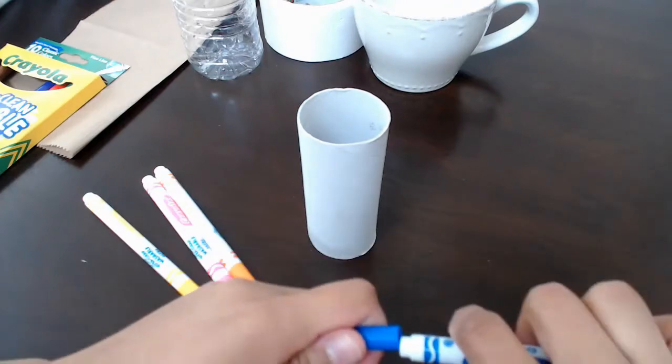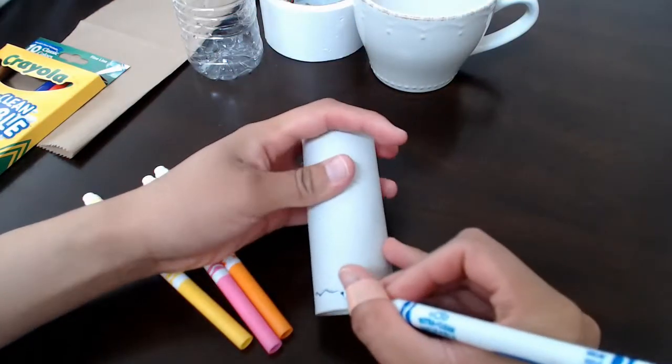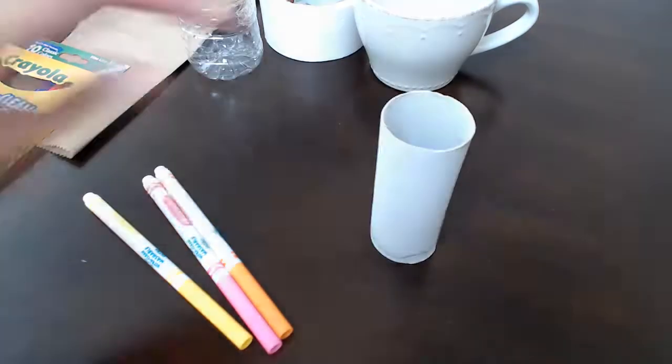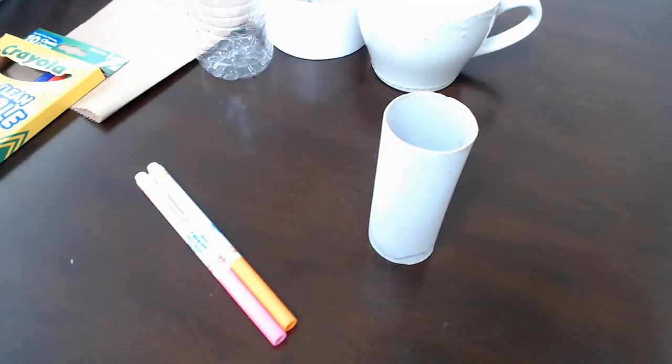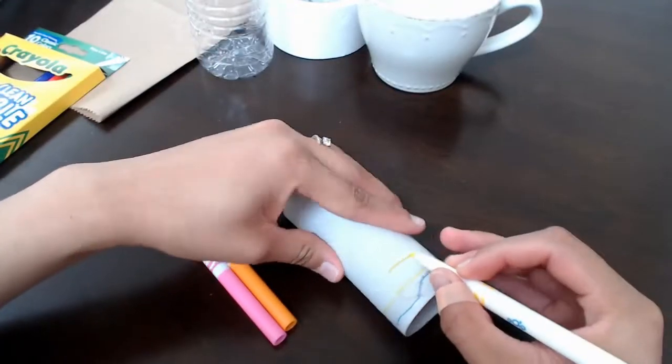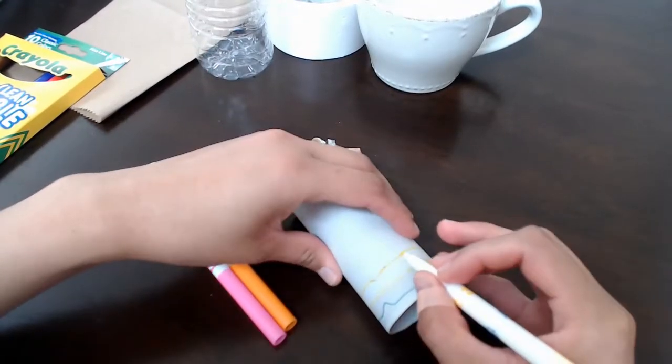So I started off by using a few markers and I'm going to be drawing patterns along all of the toilet paper rolls. You want your toilet paper roll to look as creative and colorful as possible because this is going to be your handle for your maraca.